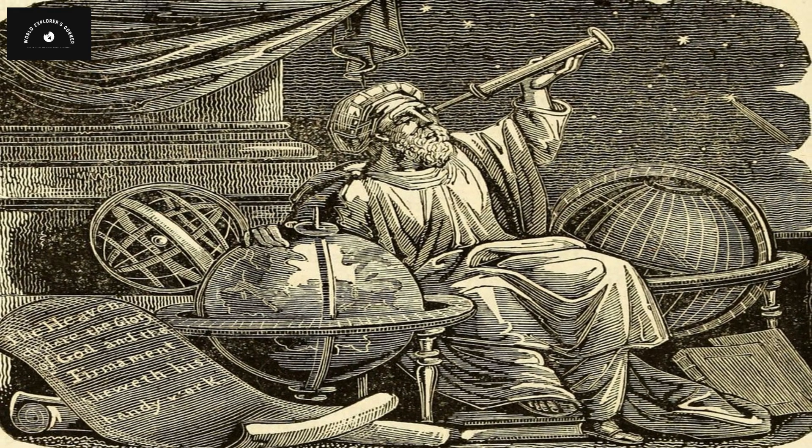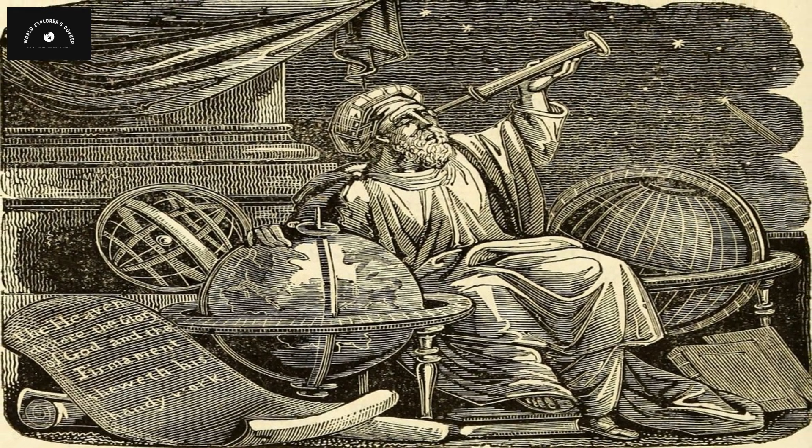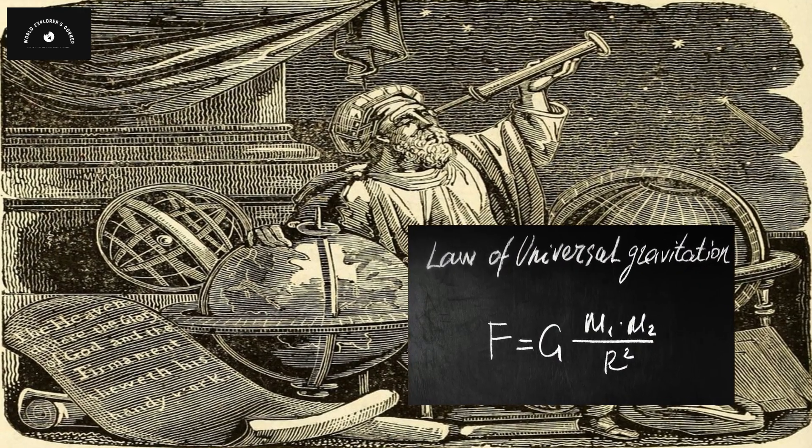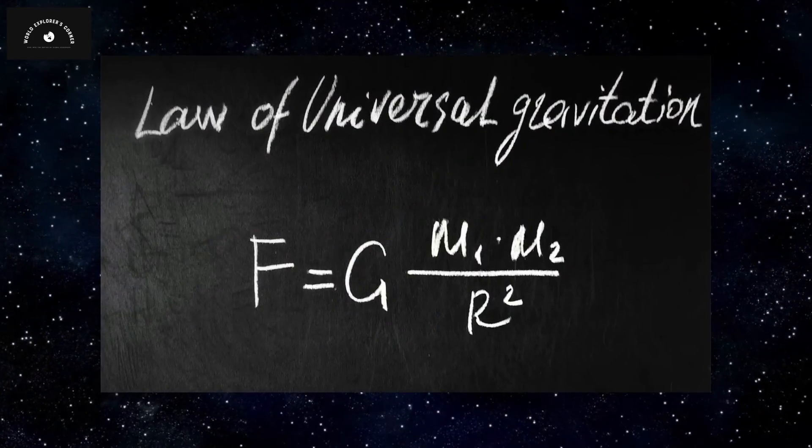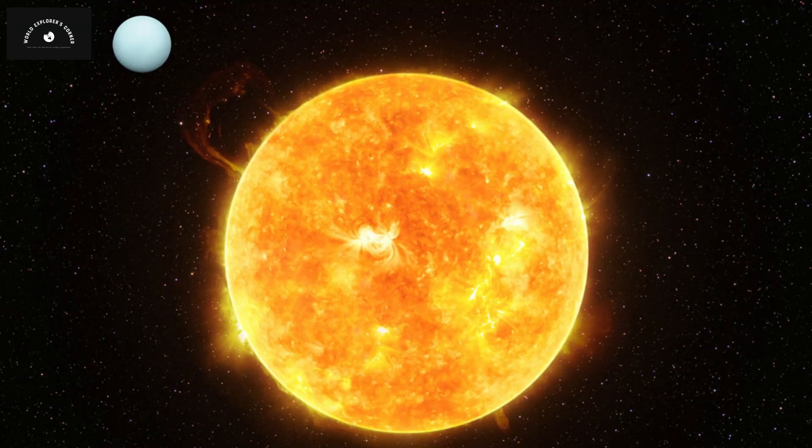Some astronomers even suggested a potential flaw in Newton's law, speculating that it might be incorrect. Unfazed by the skepticism, Le Verrier, who had devoted his life to studying celestial bodies, remained convinced of the law's accuracy and proposed that Uranus was influenced by the gravitational pull of an unseen planet.